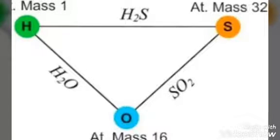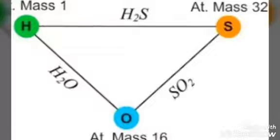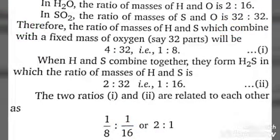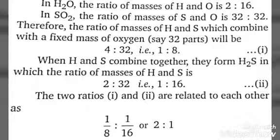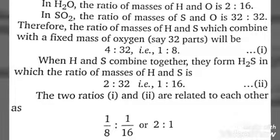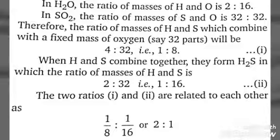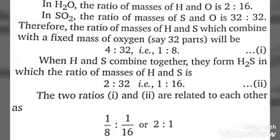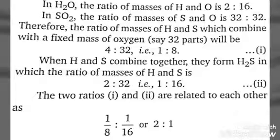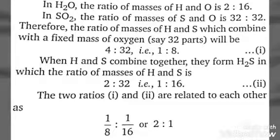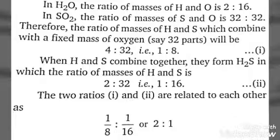In this case, they follow the law of reciprocal proportion because in water, the ratio of hydrogen and oxygen is 2:16. In sulfur dioxide, the ratio of masses of sulfur and oxygen is 32:32. Therefore, the ratios of masses of hydrogen and sulfur which combine with the fixed mass of oxygen, say 32 parts...